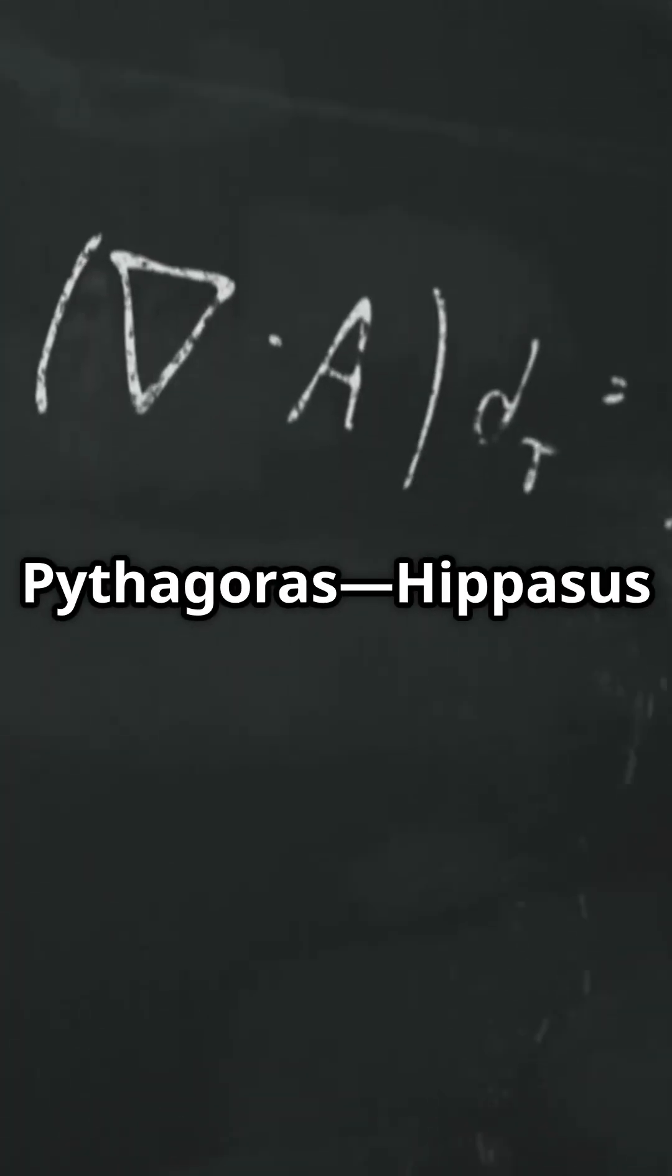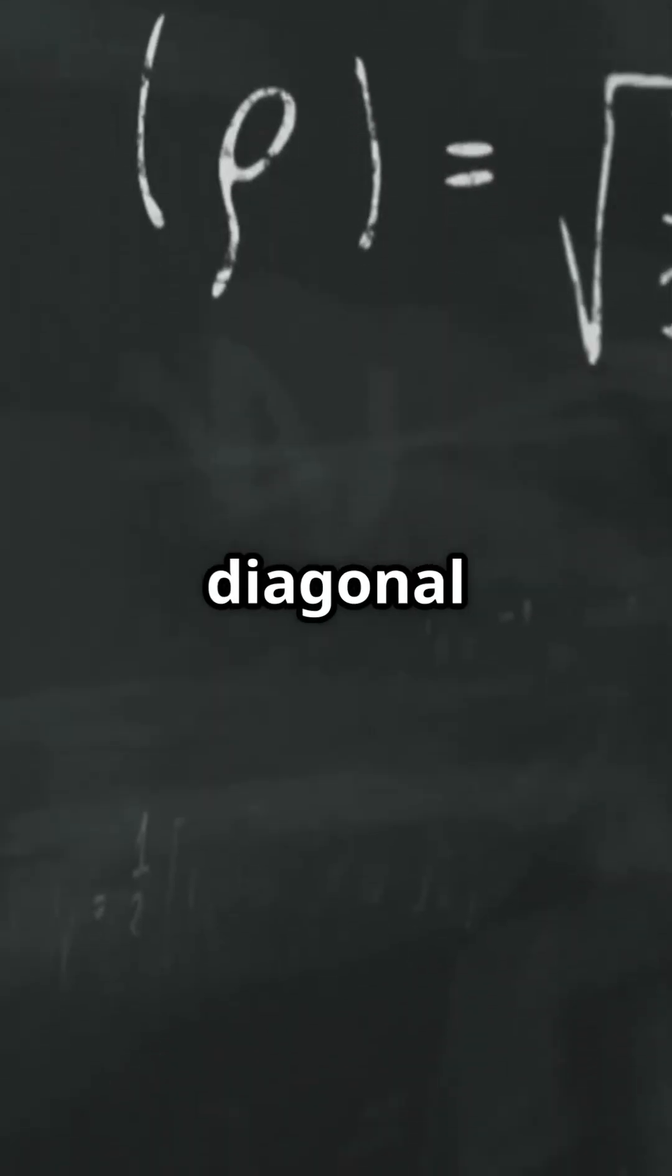According to legend, it was a disciple of Pythagoras, Hipposus of Metapontum, who discovered √2 while studying the diagonal of a square. But that discovery wasn't celebrated.